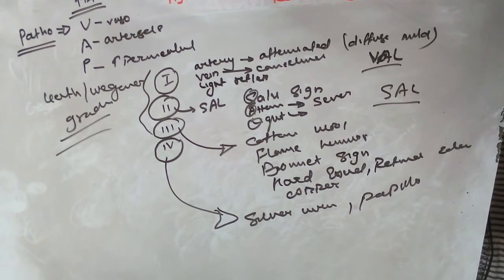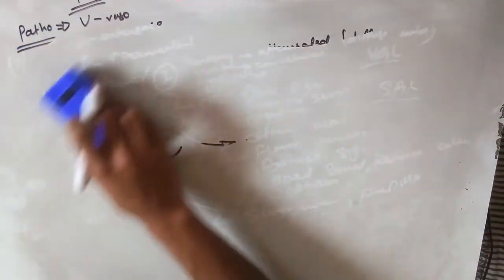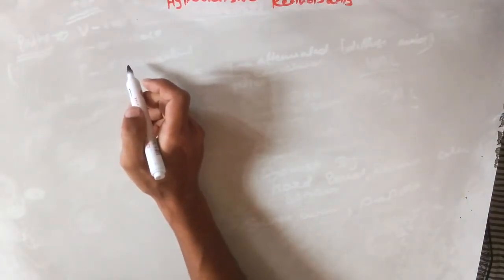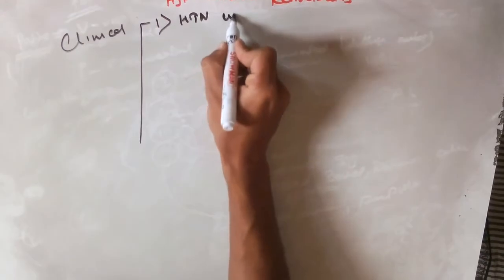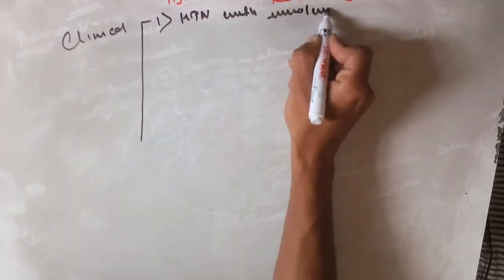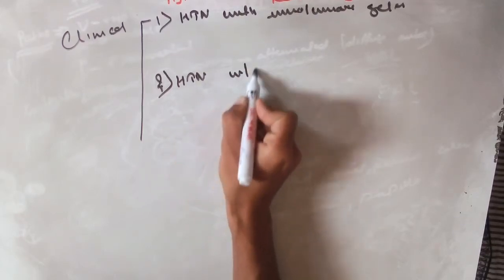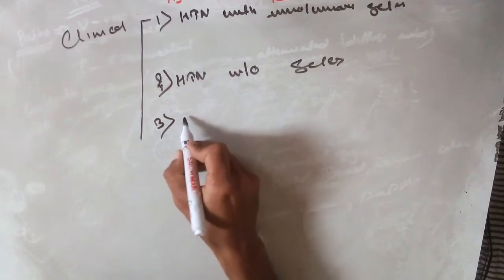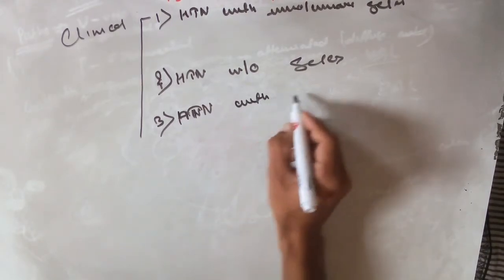The clinical classification of hypertensive retinopathy divides it into four types: hypertension with involutionary sclerosis, hypertension without sclerosis, hypertension with compensatory sclerosis, and malignant hypertension.